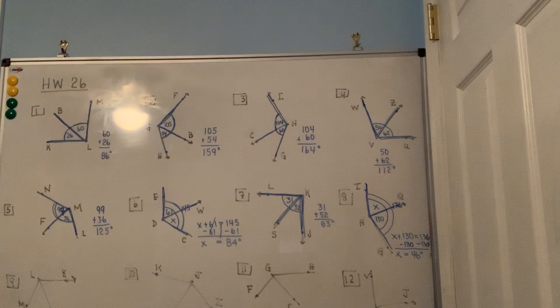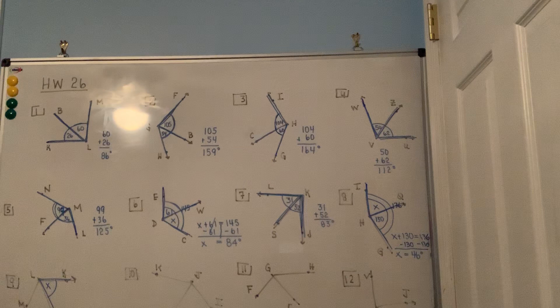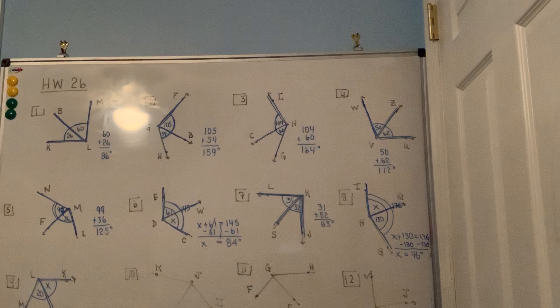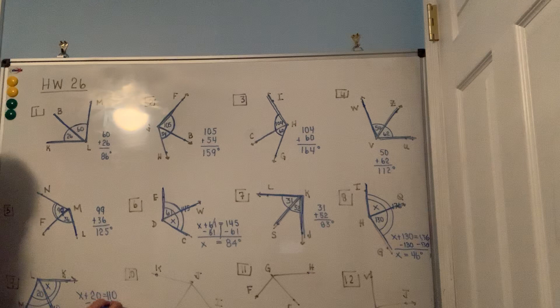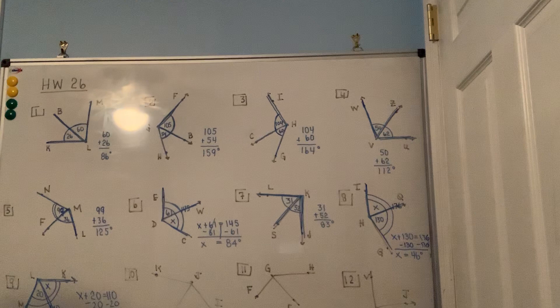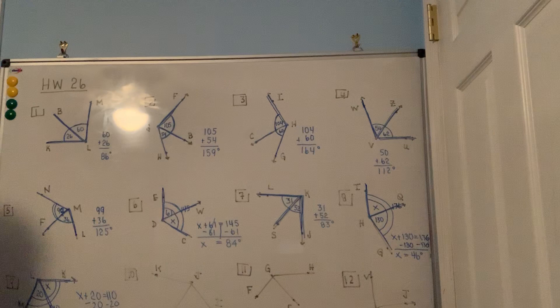Number nine: find angle KLU — a small angle, so I'll put X there. Angle ULM is 20 degrees, and the big angle KLM is 110 degrees. Add the two smaller angles and set equal to 110. Subtracting 20 from both sides gives X equals 90 degrees for the missing angle.